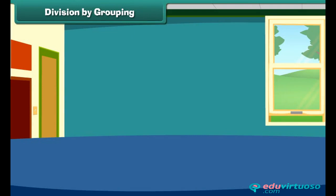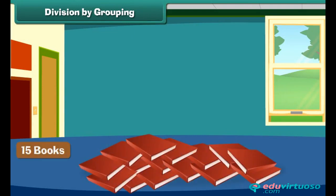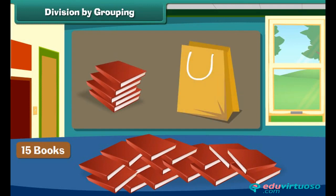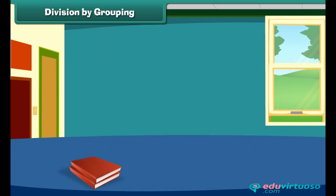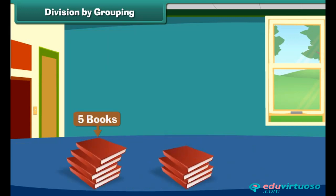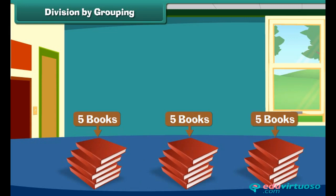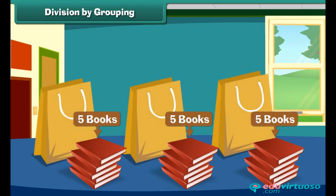Division by grouping. There are 15 books. Five books can be packed in one bag. How many bags are required to pack 15 books? Make groups of five books each. Three such groups are possible with 15 books. Hence, three bags will be required to pack 15 books.